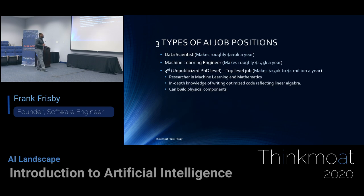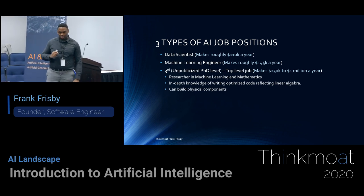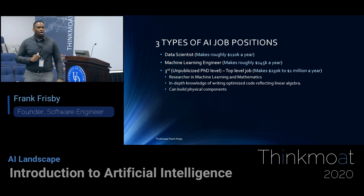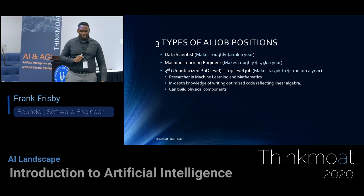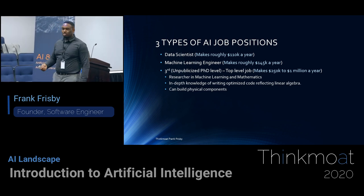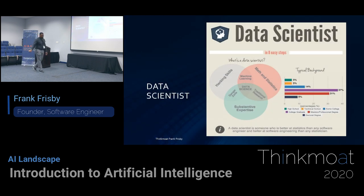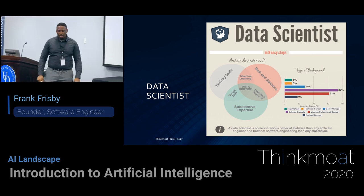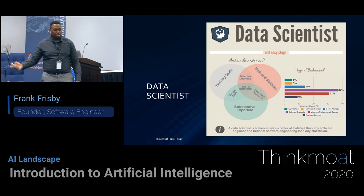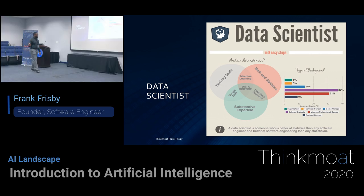There are three types of positions. There is the data scientist, who makes around $110K. There is the machine learning engineer, who makes around $145K because they're the frontliners to production. And then there is the researcher — PhD-level people who make the algorithms, write the white papers, and come up with new ideas that get implemented in companies, making somewhere between $250K to $1 million depending on the level of work. Data scientists work mainly on mathematics and high-level statistics, usually with a PhD or master's, with some programming in R or Python.